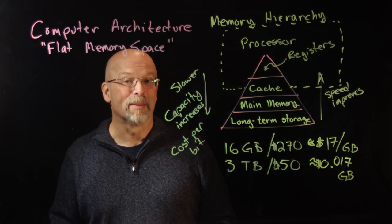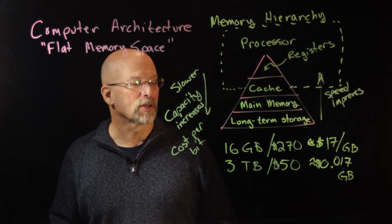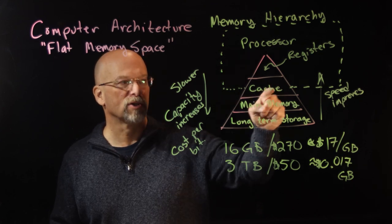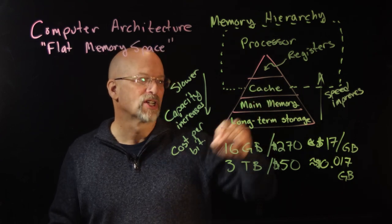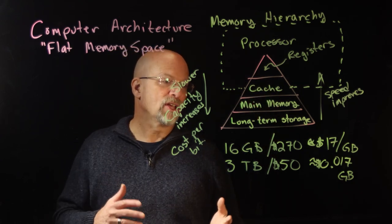Well, this number right here—the 270 for 16 gigabytes—would end up being closer to about a thousand dollars for 16 gigabytes if you tried to use the same faster technology in the cache as you went down to main memory.